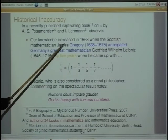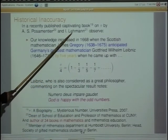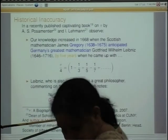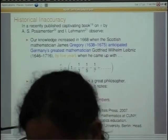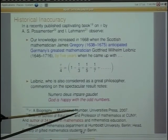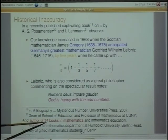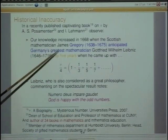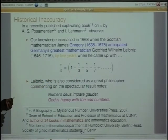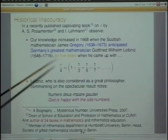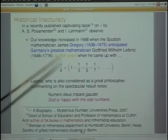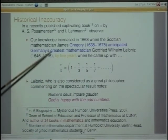As late as 2007, a book titled 'A Biography of Some Mysterious Number' was written by an author who has supposedly written 34 books on mathematics — and still there is no mention of Madhava. This is not much known in the West. I would not say it is deliberately done, but this book, written as late as 2007 when so much has been spoken about all this, does not even mention Madhava's contribution.